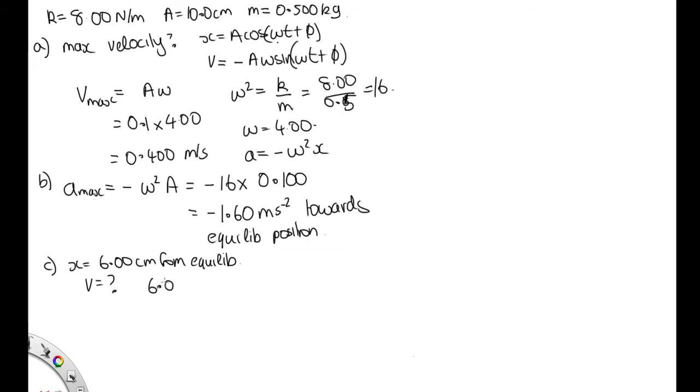We've got 6.00 is equal to 10.00, so this is just substituting in for x. This is A cos, and we'll assume phi equals 0. So we've got cos omega t, so that's 4t. And so solving it for t, we've got 4t is equal to the inverse cos of 6 over 10.